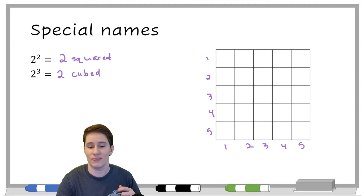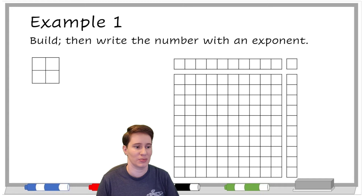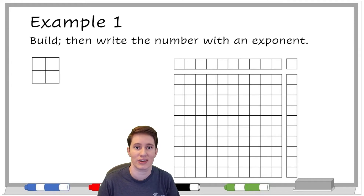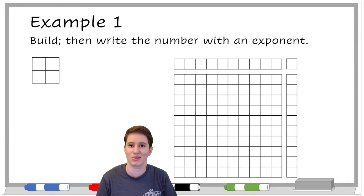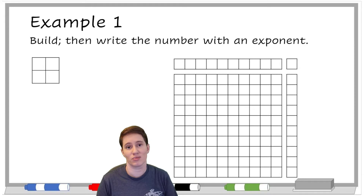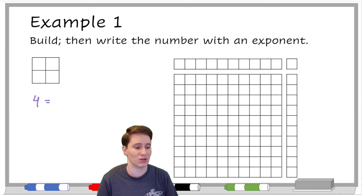Let's look at some problems related to exponents. Example one says: build, then write the number with an exponent. I think this is intended to go with some manipulatives — the idea that you could build these figures with manipulatives you have at home — but not necessary if we just want to think about how we would write this with an exponent. So for instance, there are four squares here. How would we write this as an exponent? We would count the side lengths — one, two on each side — and write it as two squared.